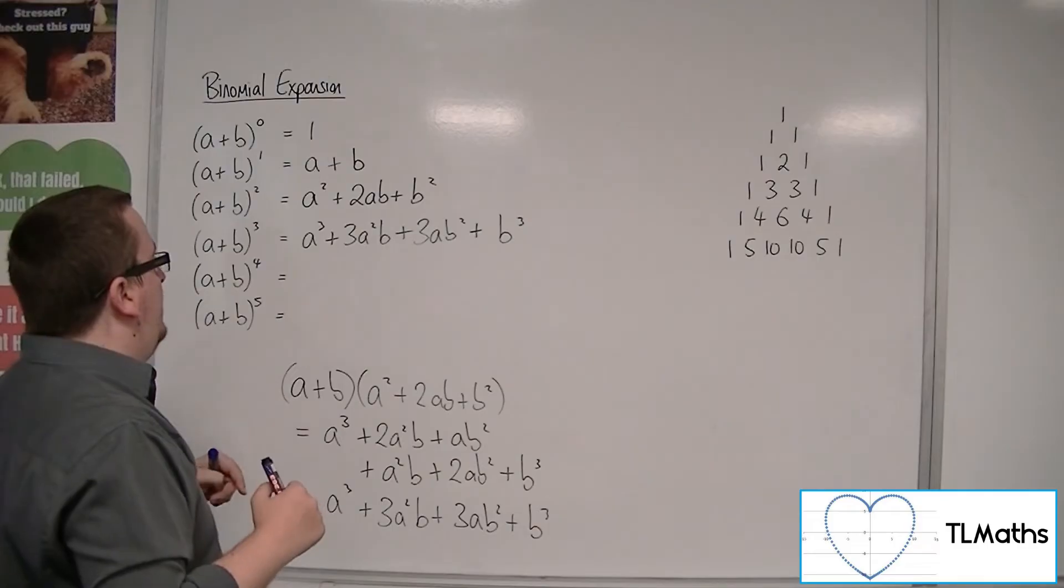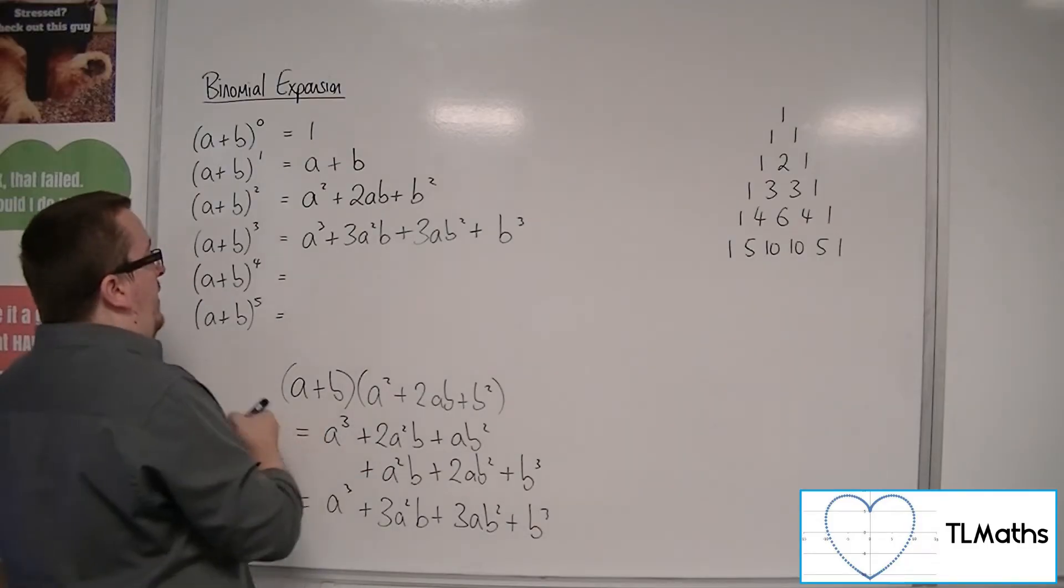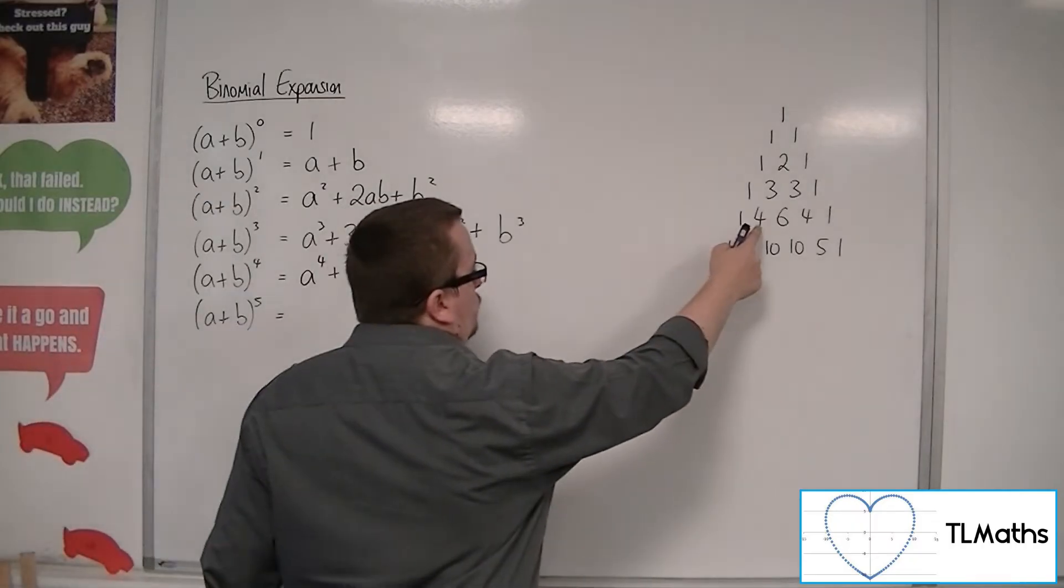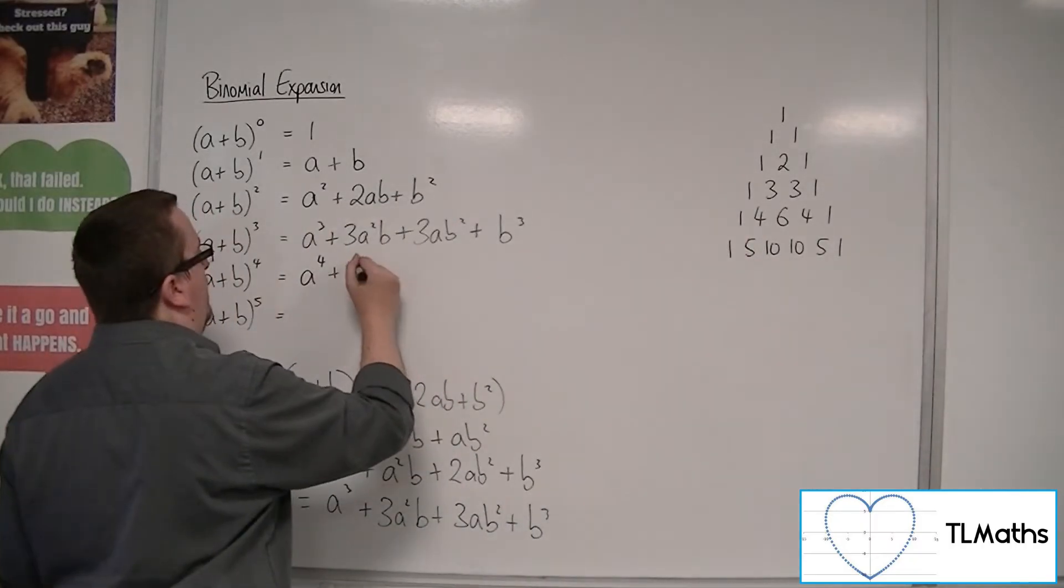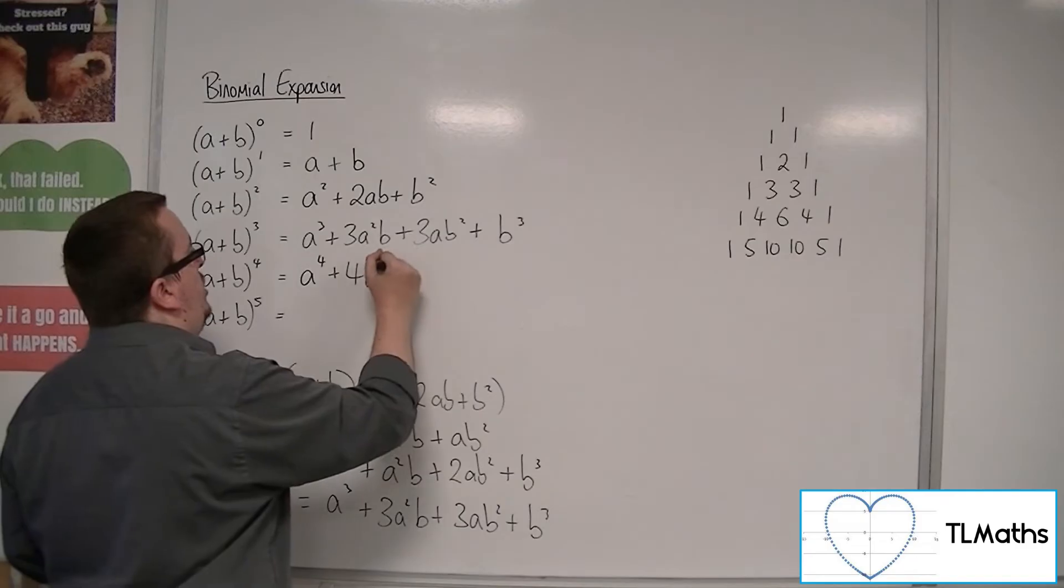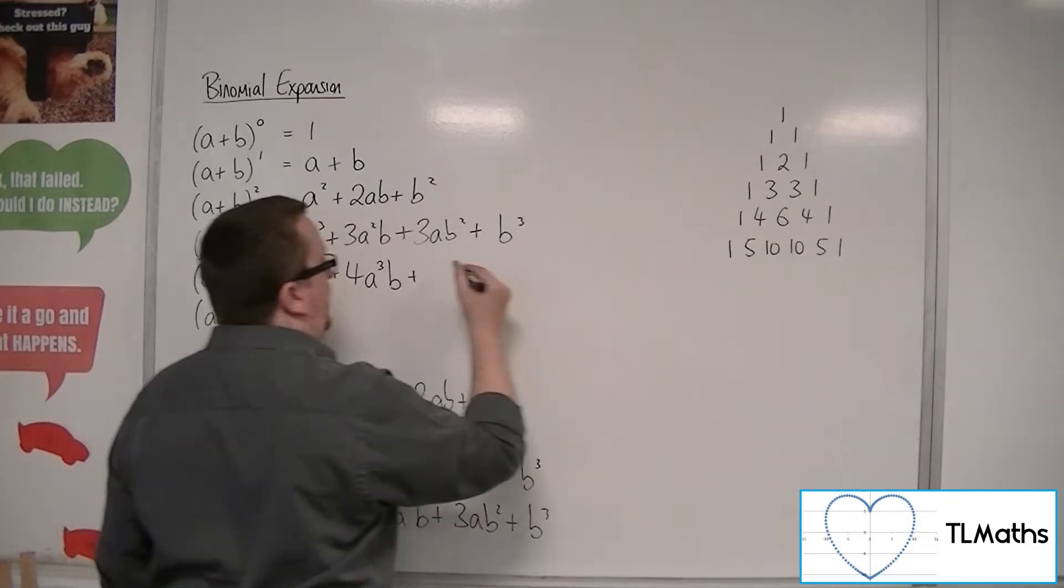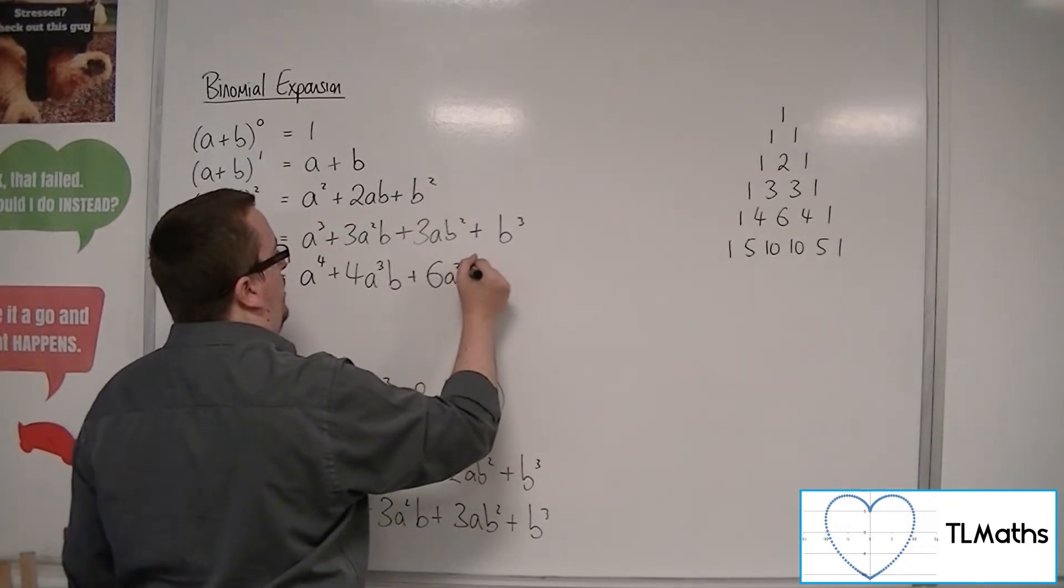So A plus B to the 4 would start with A to the 4. Pascal's triangle says it should be 4 as the coefficient. A will reduce in power. B will increase in power.